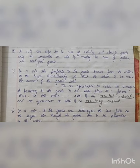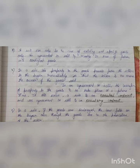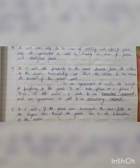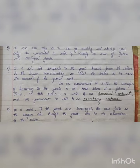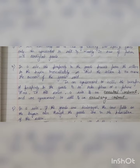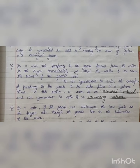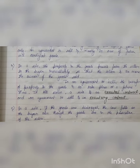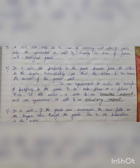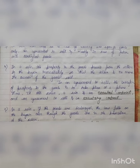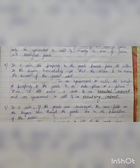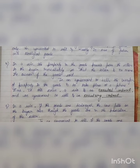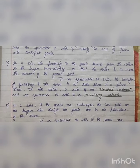In a sale, the property in the goods passes from the seller to the buyer immediately, so that the seller is no longer the owner of the goods sold. But in an agreement to sell, the transfer of property in the goods is to take place at a future time.